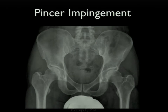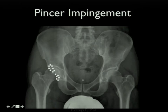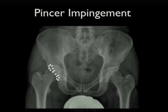On plain radiographs, pincer impingement is defined by the crossover sign, traced by running a line around the anterior and posterior aspect of the acetabulum. This represents the acetabular retroversion seen in pincer impingement. This measurement is significantly prone to error—if the patient is positioned incorrectly or the tip of the coccyx is not within approximately 10 centimeters of the pubic symphysis, you can get abnormal results. Technologist positioning education is critical.